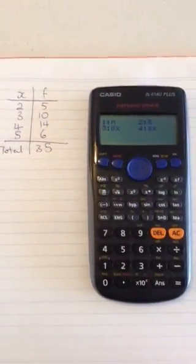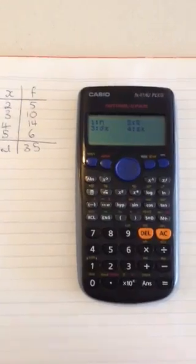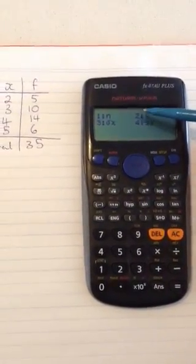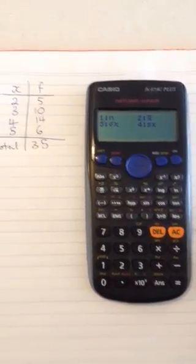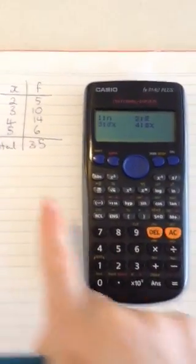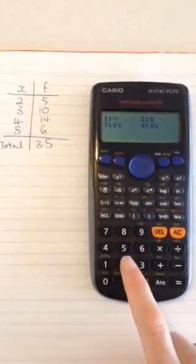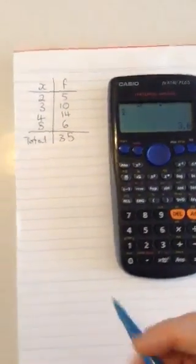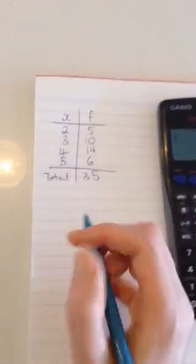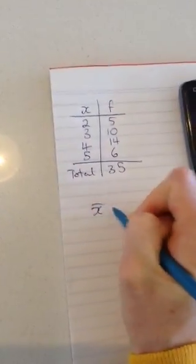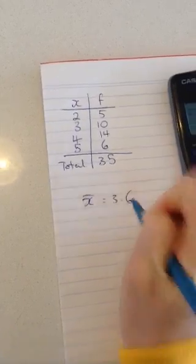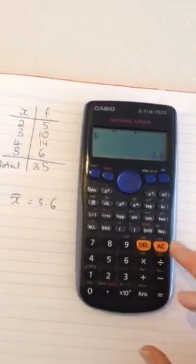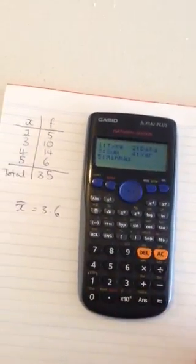Now, these are my summary statistics that are very helpful. Number 2 there, if you can see it, is an x with a little line above it. That's actually the symbol for my mean. So in order to find the mean of this data set, if I click number 2, once my data's all in there, press equals, well, I actually work out that the average of this data set is 3.6. There you go. That was nice and easy. Press AC to clear out of that. Go back into your stat menu.